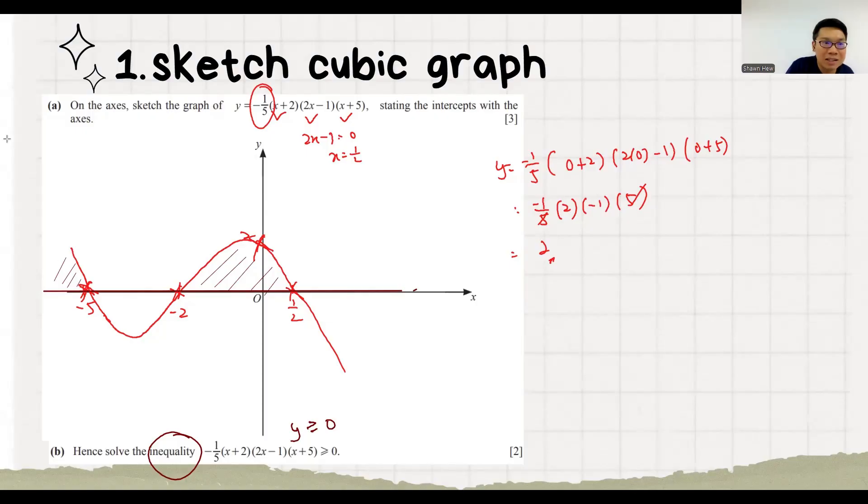More than this means this region and this region. So we can confirm x is going to the left. So it's x lesser or equal to minus 5. Or x is in between these two values, minus 2 and 1 over 2. Done. Why both of them also have the equal sign is because we follow back the question. The question have equal sign. So our final answer must have equal sign also.